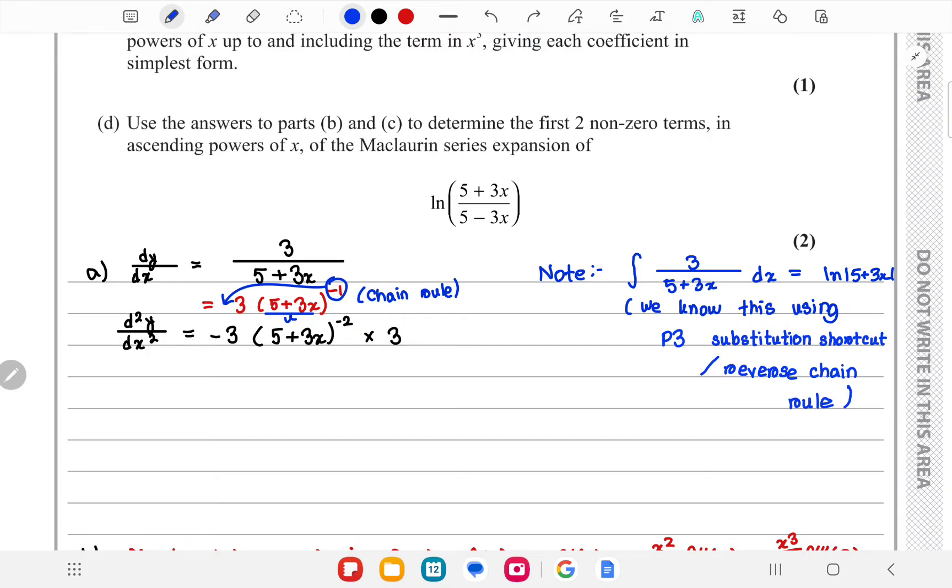Now moving on to the third derivative of y with respect to x, we'd have to differentiate this. We'd have to use the chain rule again, so minus 9 times minus 2—minus 2 is from this power—and then if we differentiate 5+3x we get 3, so we bring this 3 outside.